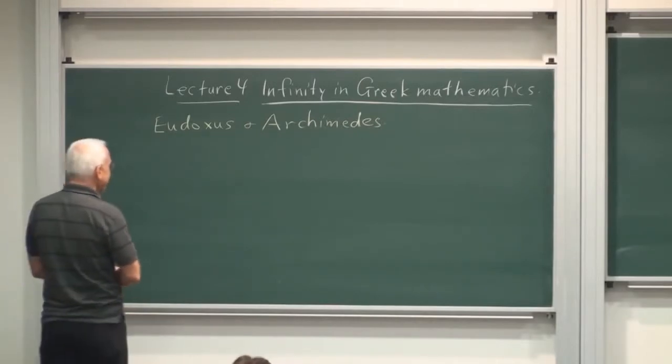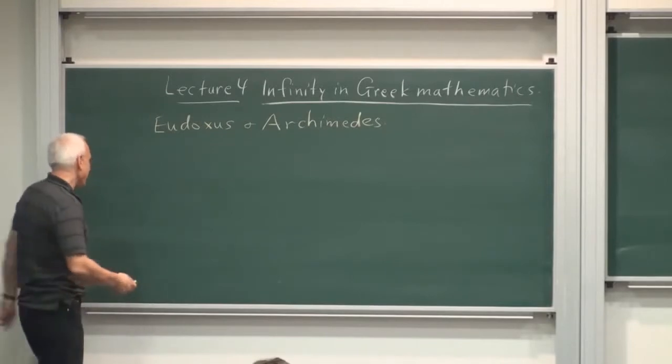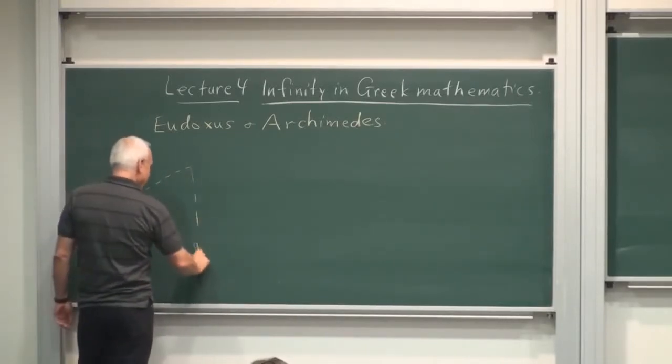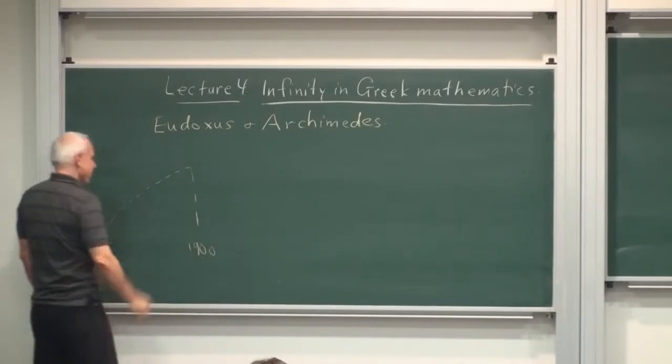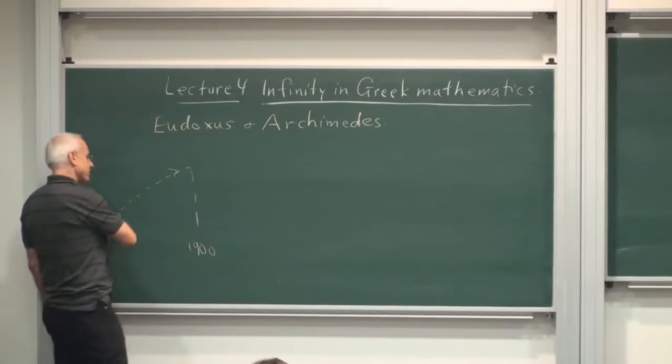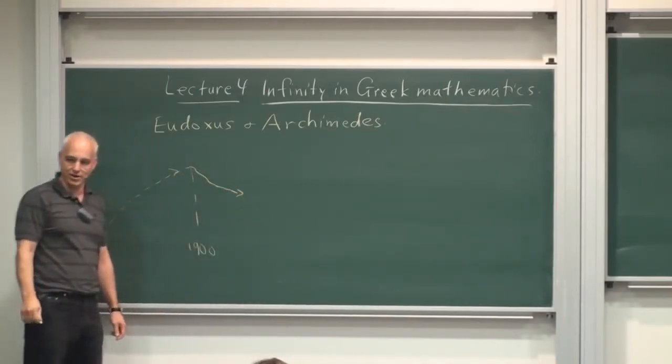The trajectory of mathematics is rather interesting. I would say that around the year 1900, the trajectory went off in a rather different direction. So there was kind of a trajectory, and then suddenly it went in a rather different direction.